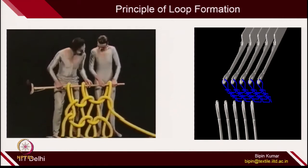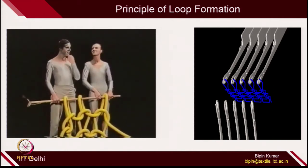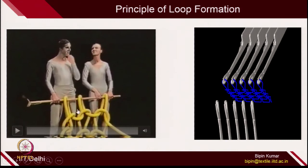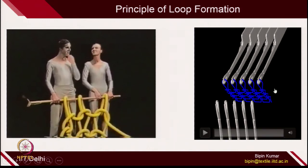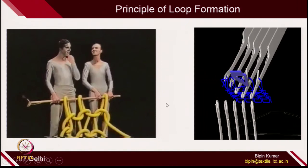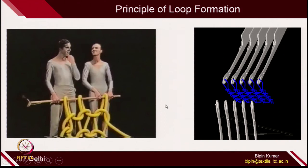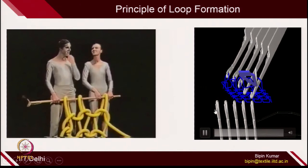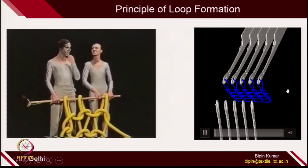Once this principle is clear, you can formalize these movements mechanically. The same formation of loops can be done with the help of needles, which replicate hand movements in a much more uniform and accurate way. The needle catches the yarn and pulls it from one side of the loop to the other side — this is how loops are created in a weft knitted structure.